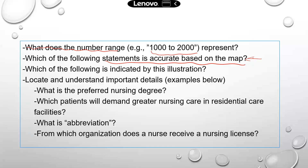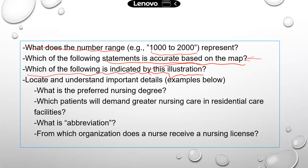As you prepare for TEAS, if you happen to see a map somewhere — like in a school hallway or textbook — spend a few minutes going through it and see if you can identify all the elements on the map. I'll try to find something like that in the future to help you learn how to read a map. Another question type is: which of the following is indicated by this illustration? See if you can match the correct statement or main topic with the illustration, like an infographic representation.